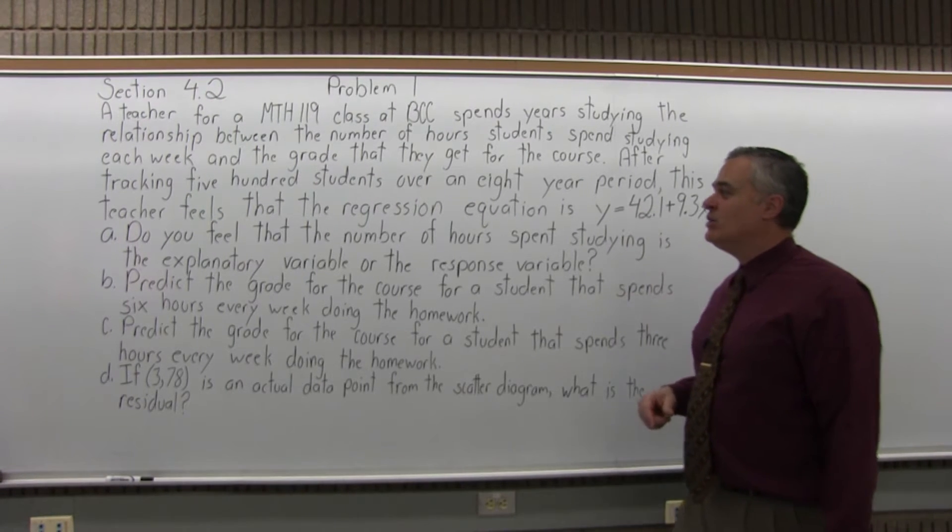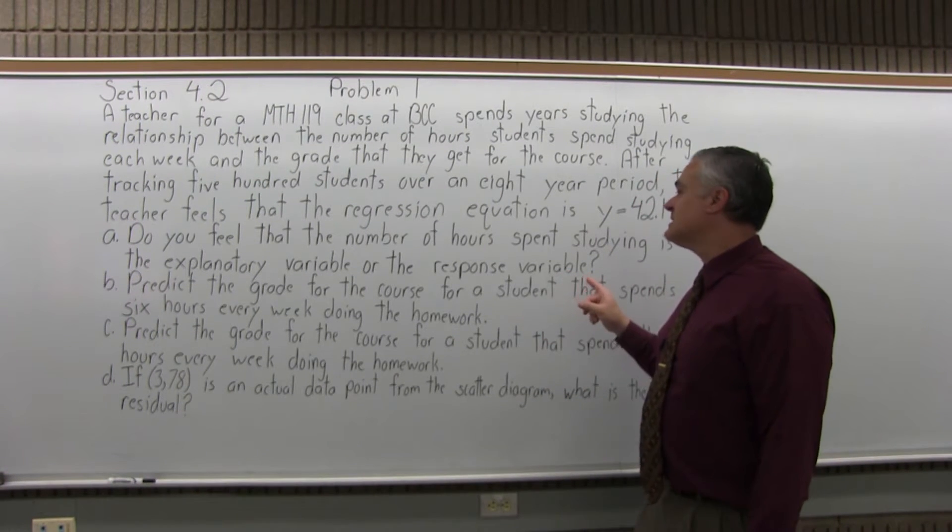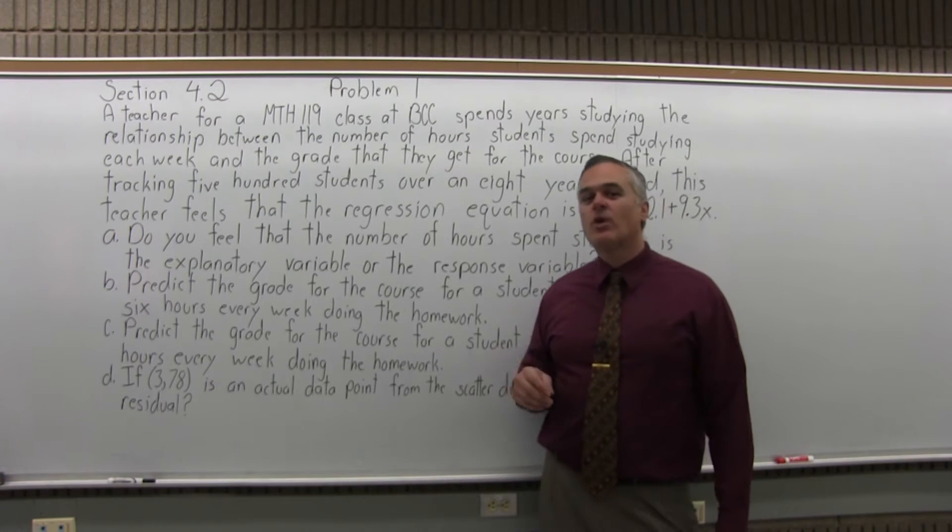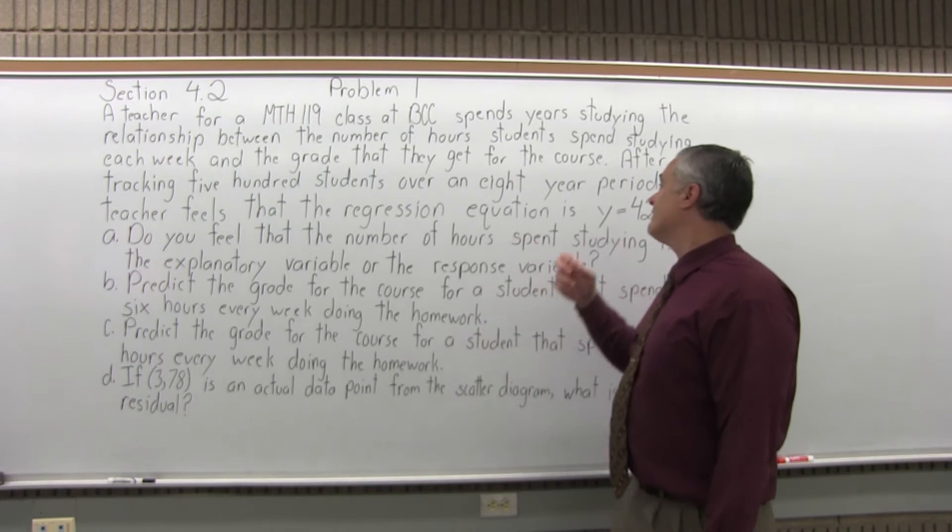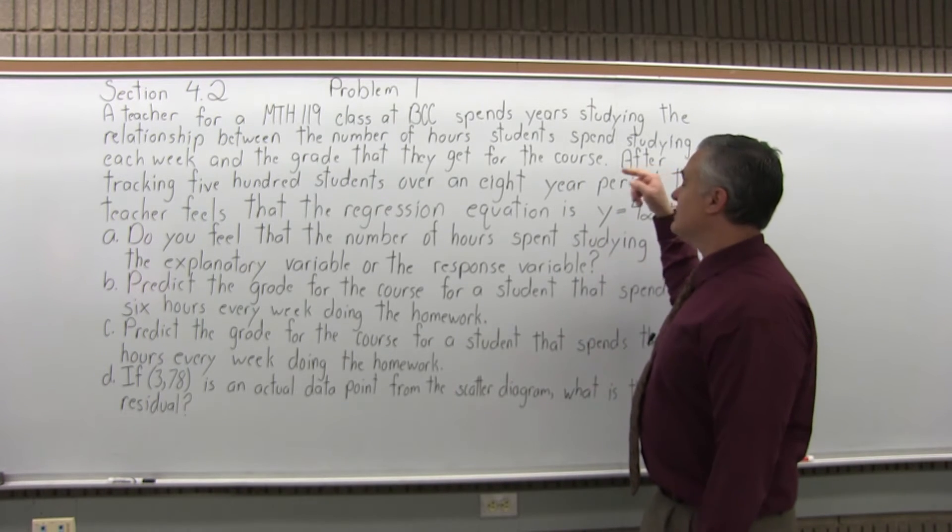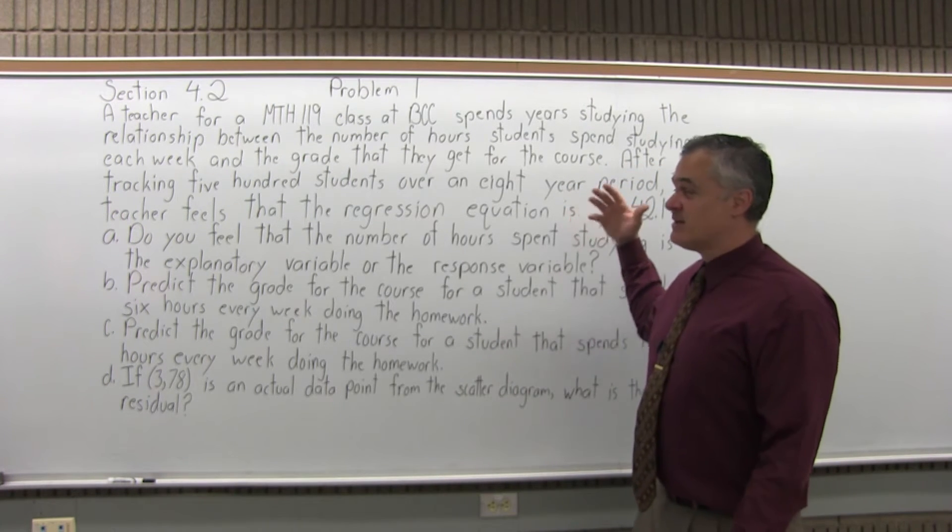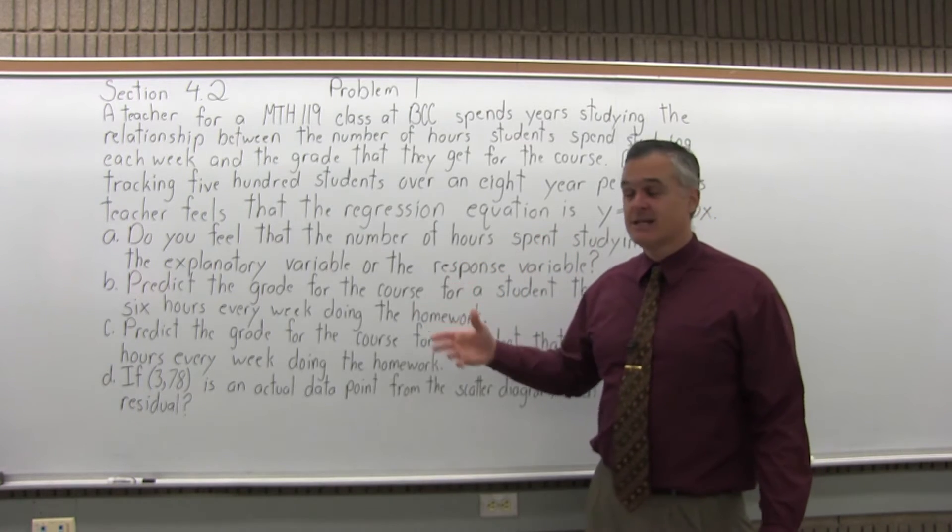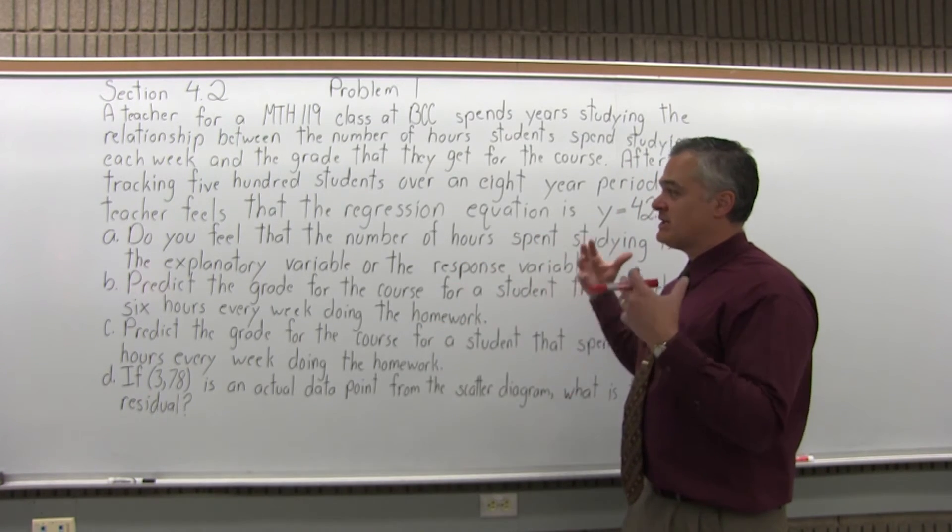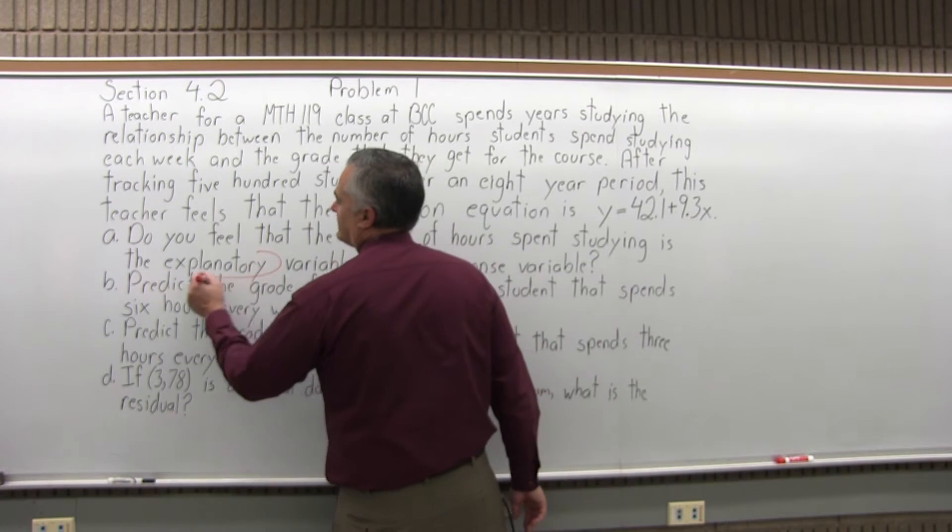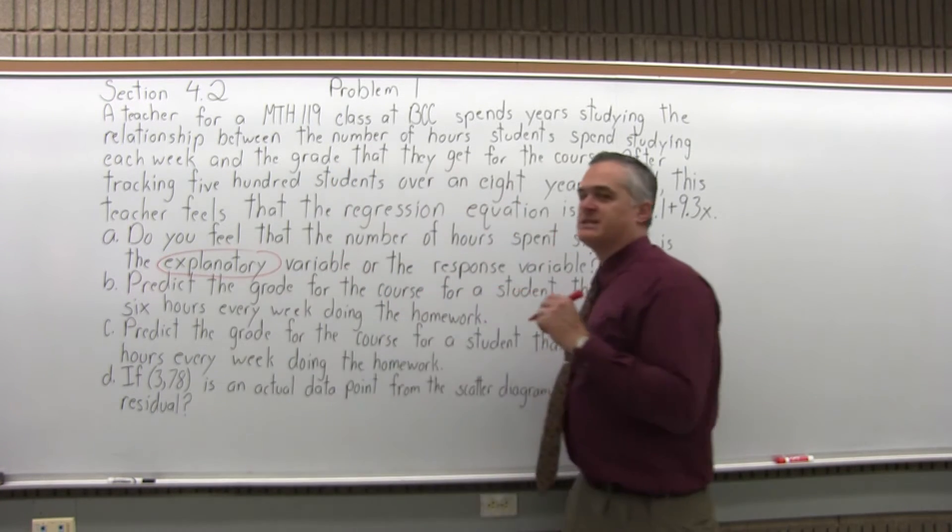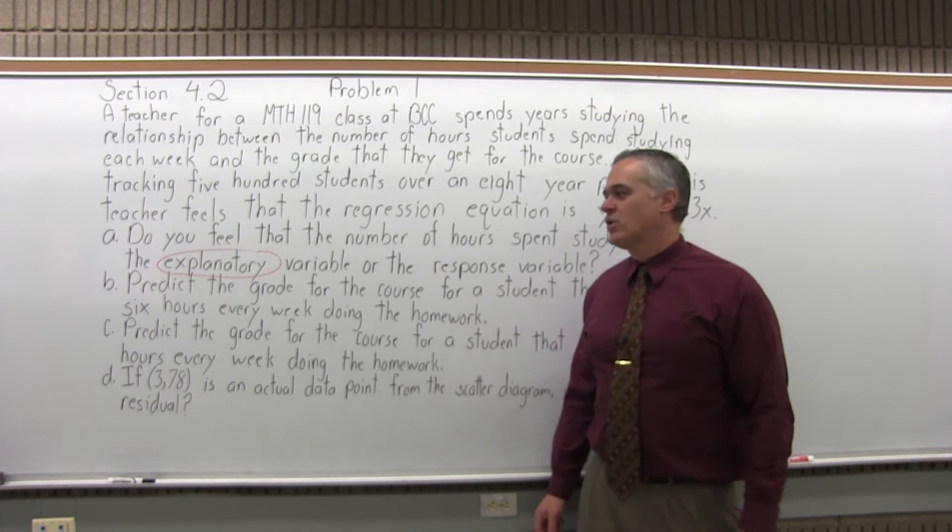Part A: Do you feel that the number of hours spent studying is the explanatory variable or the response variable? In other words, the number of hours you spend studying, are you putting that in for the X or is that the answer you're getting out for the Y? Well, it is going to be the value you put in for the X. What you get for the Y, the response, is the grade for the course. So explanatory is the number of hours that you spend studying. Response is the grade for the course.